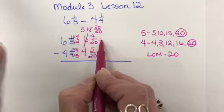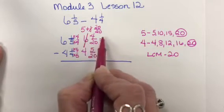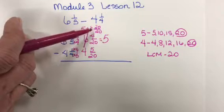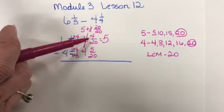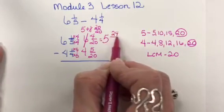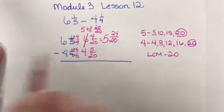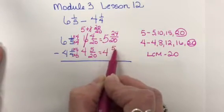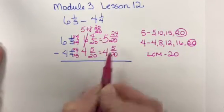So now, I have the whole number 5. I have my 20 twentieths that I'm going to have to add to the 4 twentieths, which will give me 24 twentieths. And my 4 and 5 twentieths stays the same.